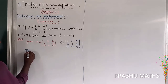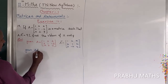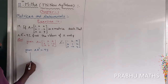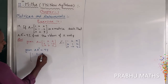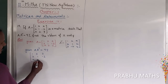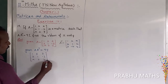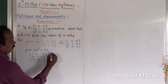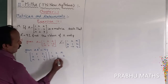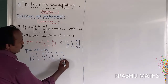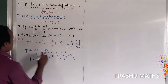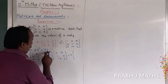The given condition is A·Aᵀ = 9I. So A = [1, 2, 2; 2, 1, -2; X, 2, Y] multiplied by Aᵀ = [1, 2, X; 2, 1, 2; 2, -2, Y], and this equals 9I.